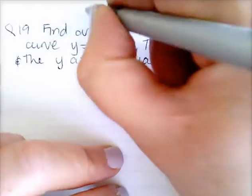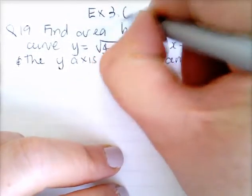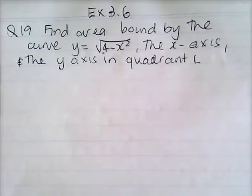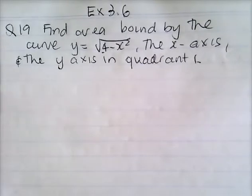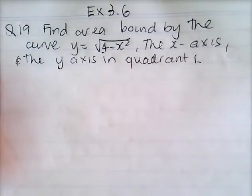This is exercise 3.6, question 19: find the area bound by the curve y equals the square root of 4 minus x squared, the x-axis and the y-axis in quadrant 1.